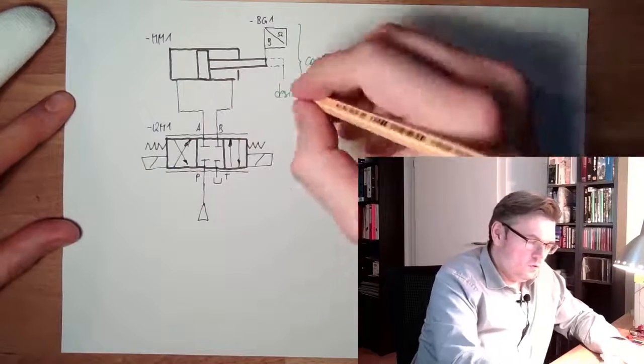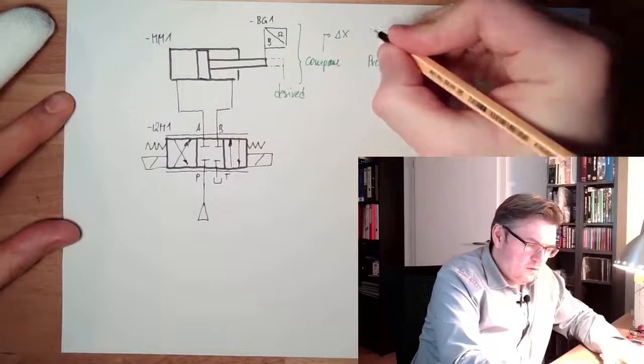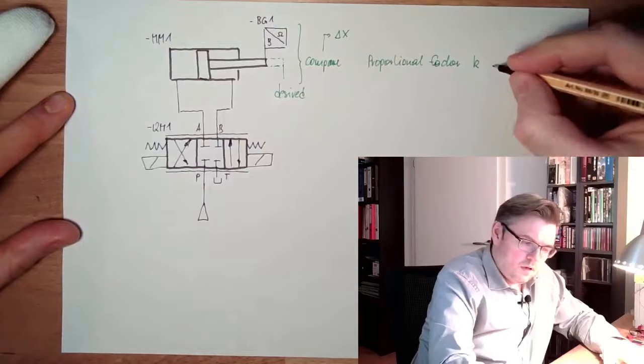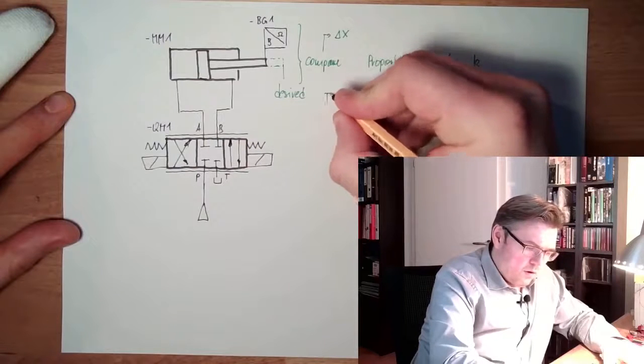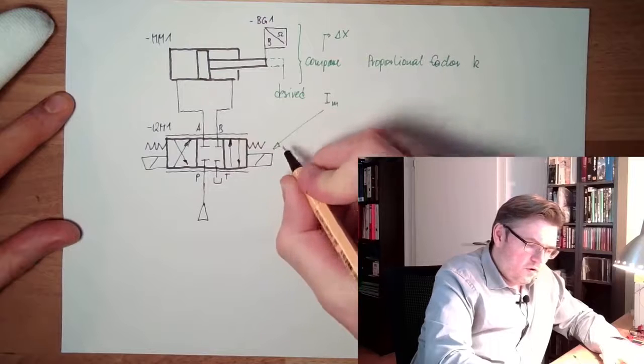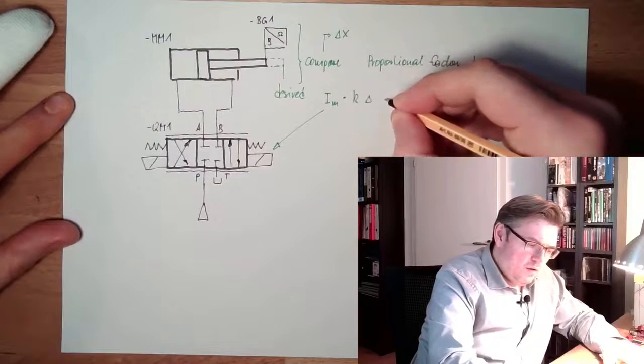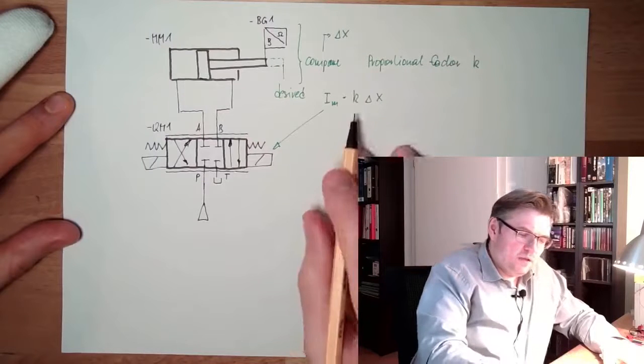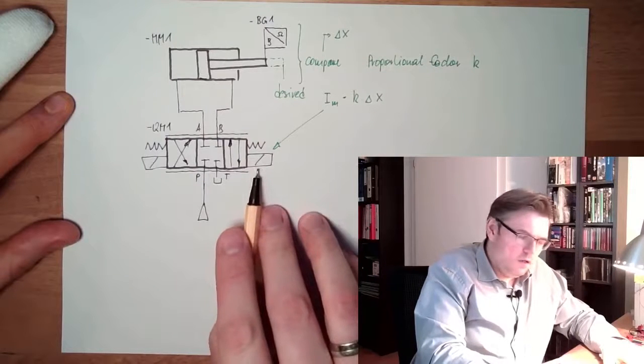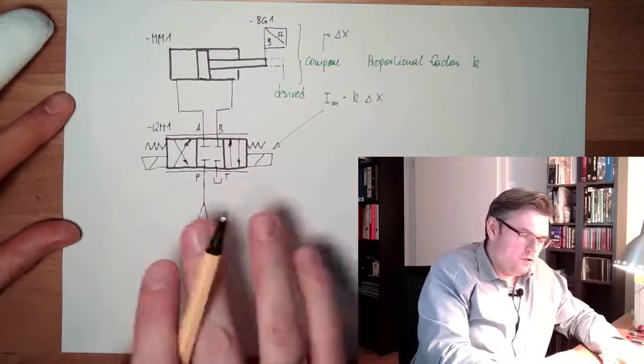So we have a delta x. And our magnetizing current here is k multiplied by delta x. If the magnetizing current is positive, I will put it here. If the magnetizing current is negative, I will put it here.